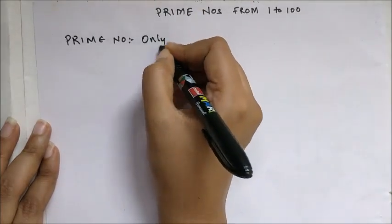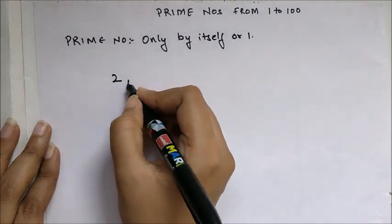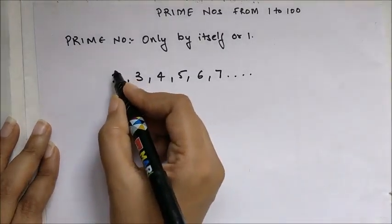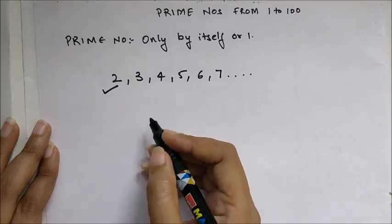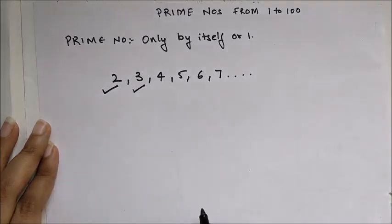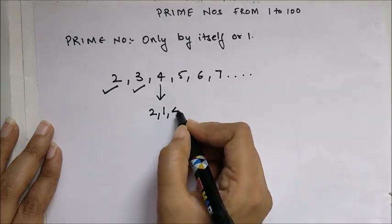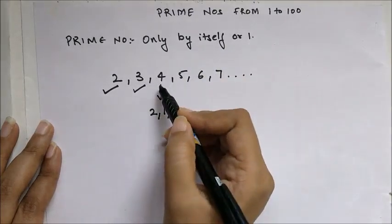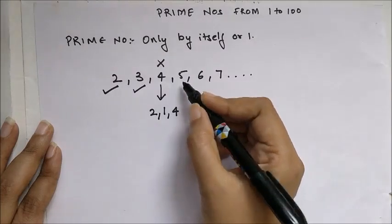Let's take a few numbers: 2, 3, 4, 5, 6, 7, and so on. Can we say that 2 gets divided by any number except 1 and itself? No — so 2 is a prime number. Similarly, 3 also gets divided only by itself or by 1, so 3 is also a prime number. But for 4, it can be divided by 2 as well as 1 and itself. The definition of prime number requires division only by itself or 1, so 4 cannot be considered a prime number.